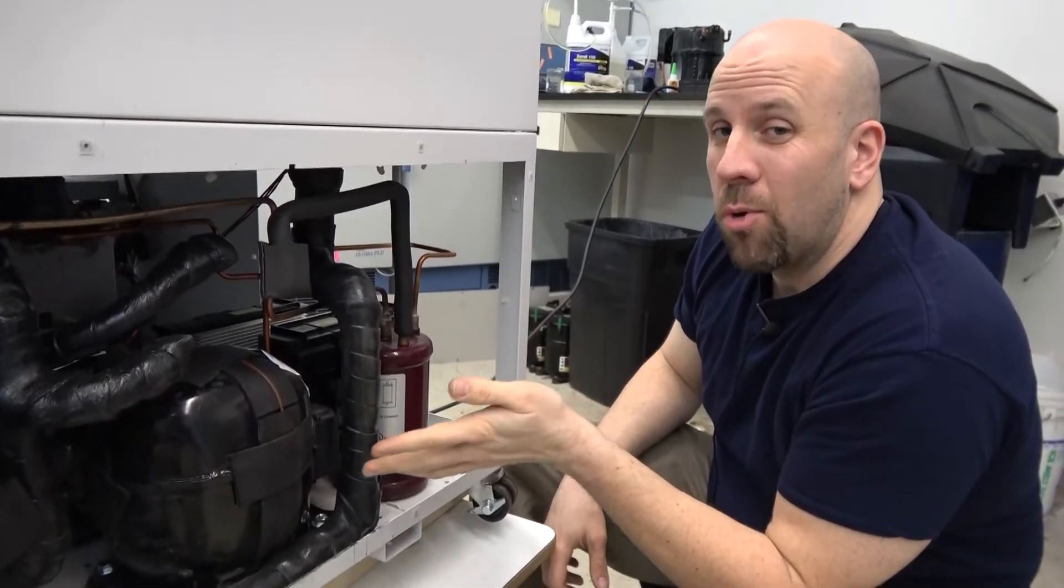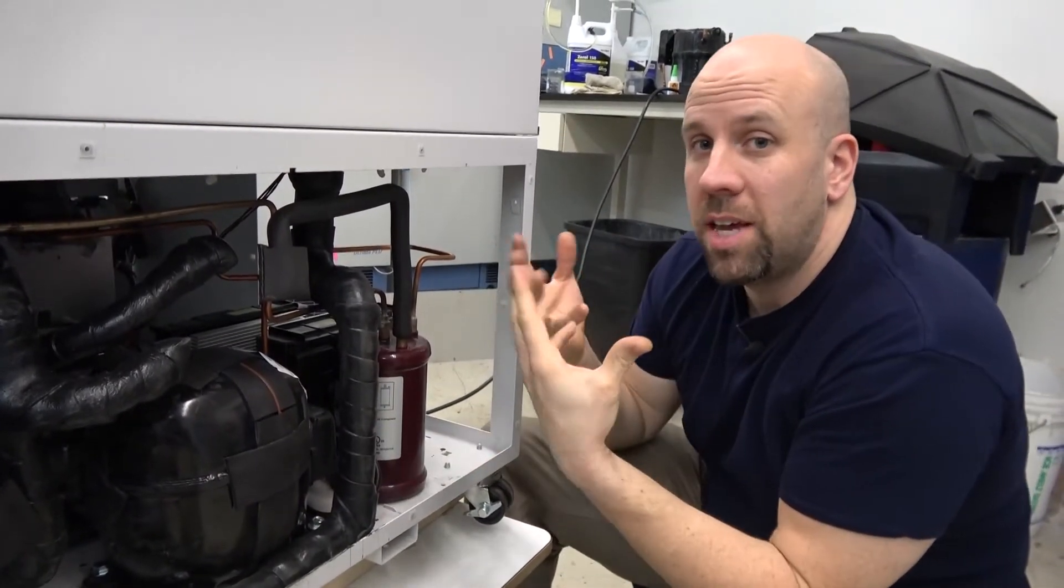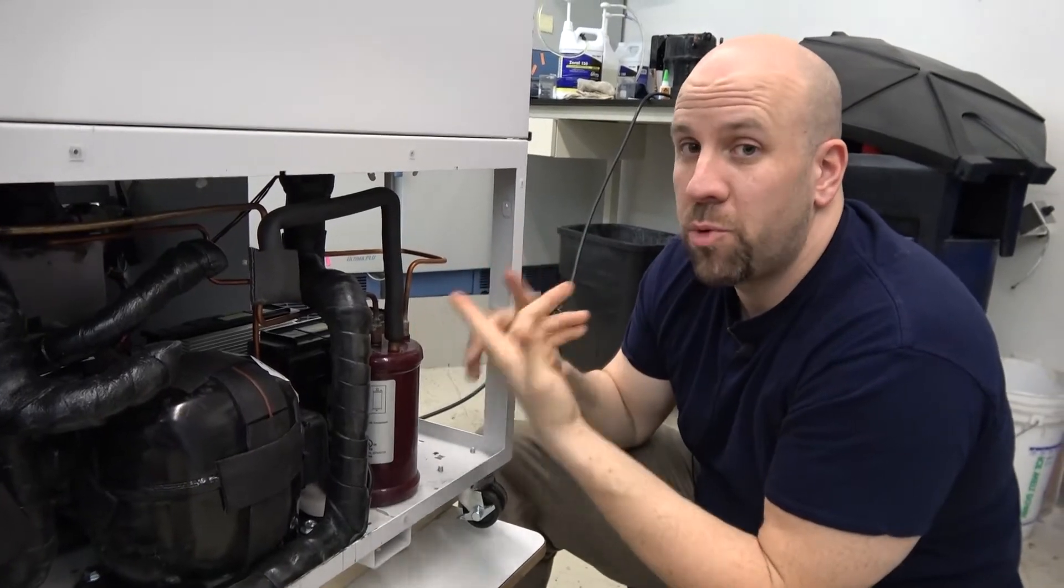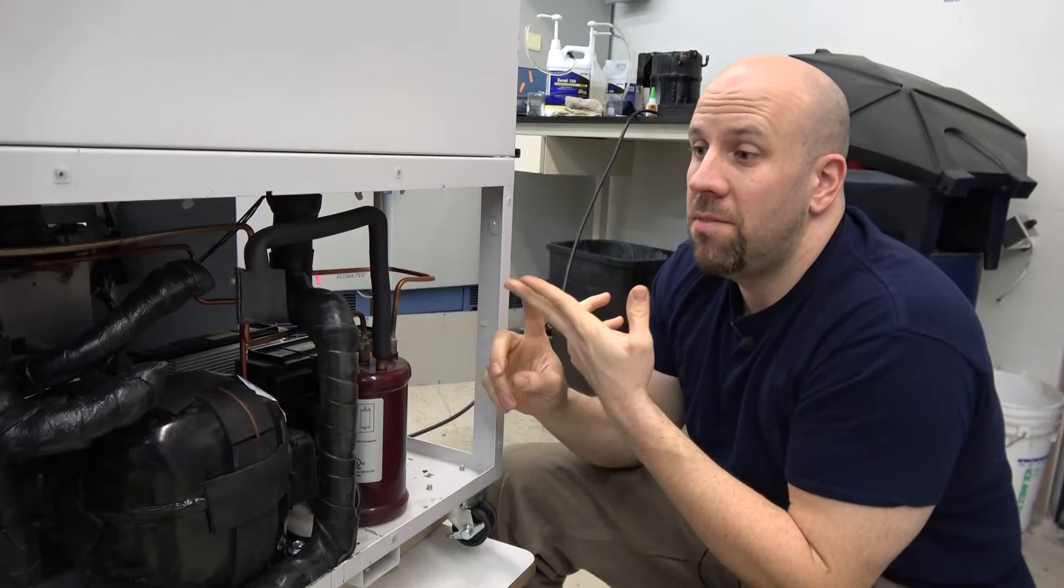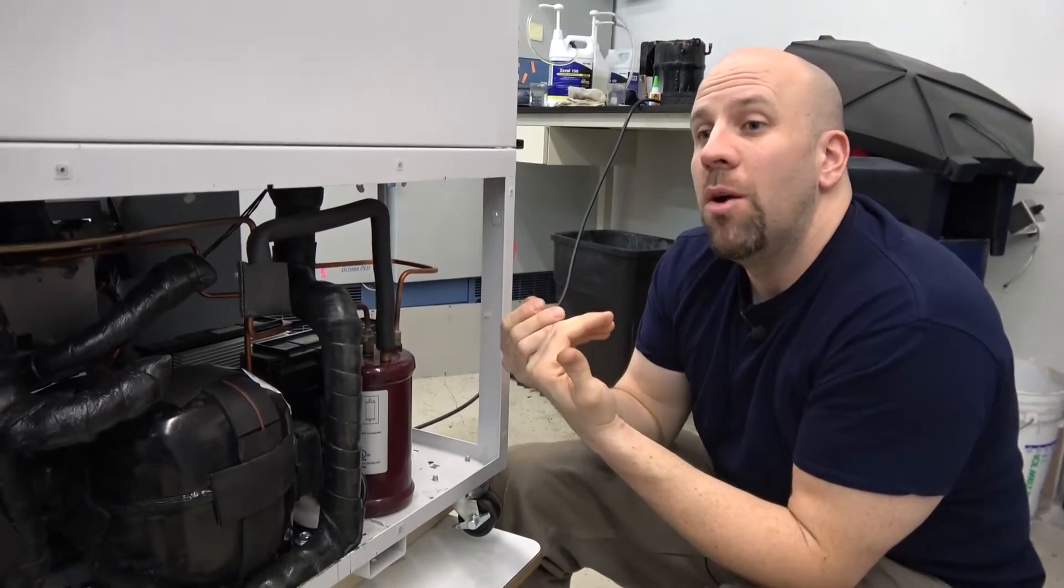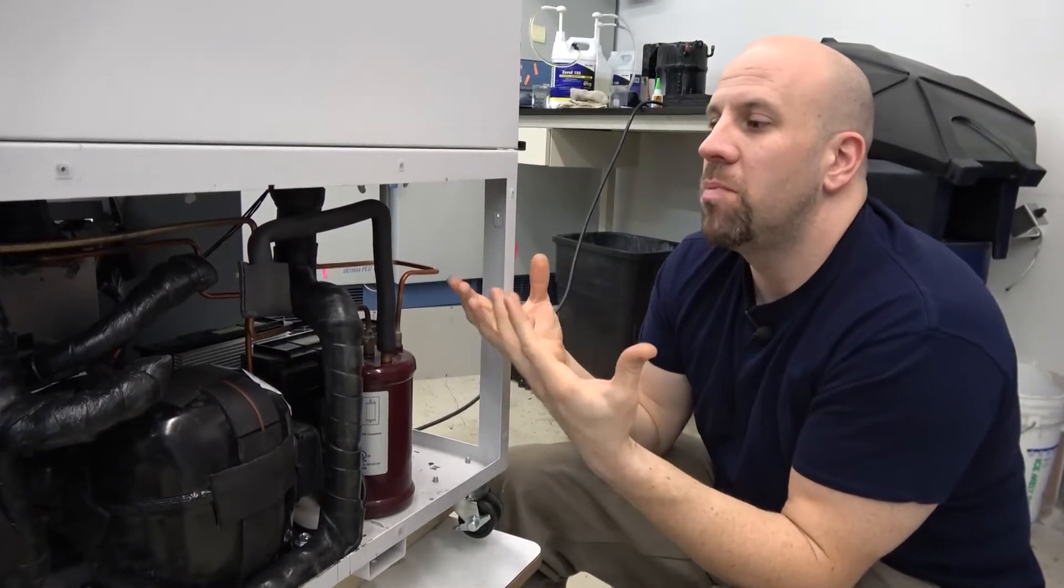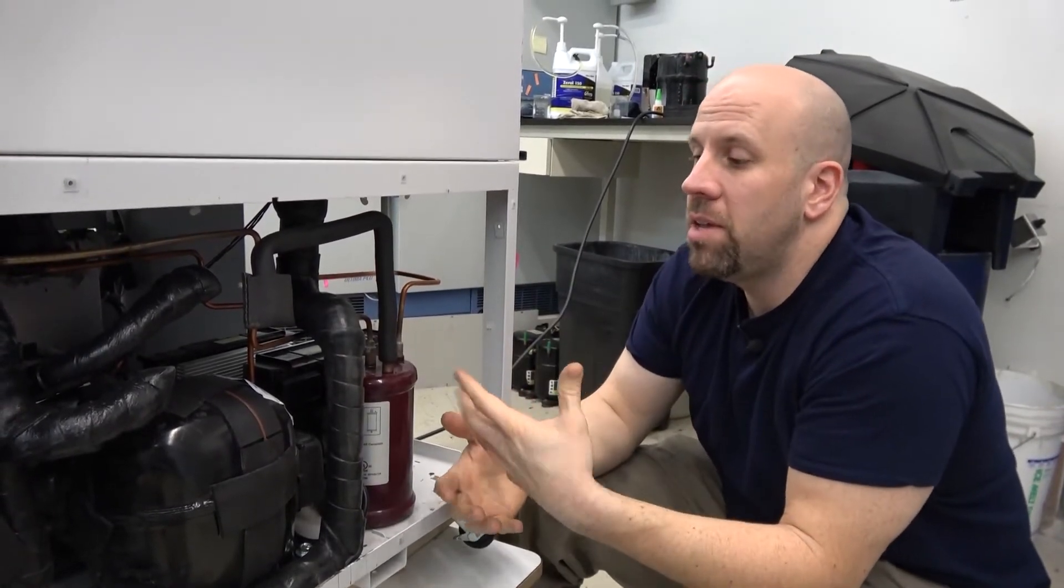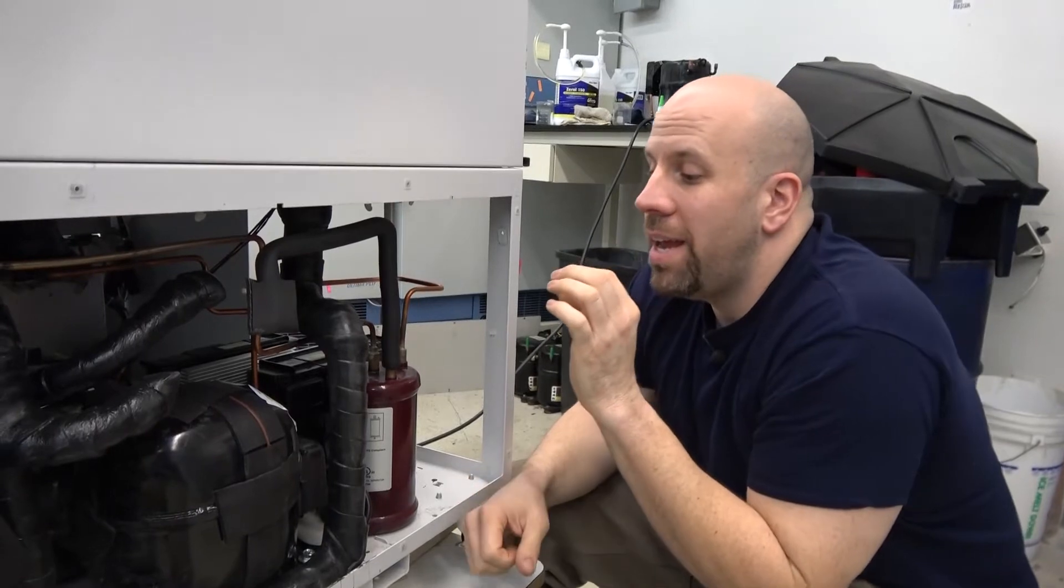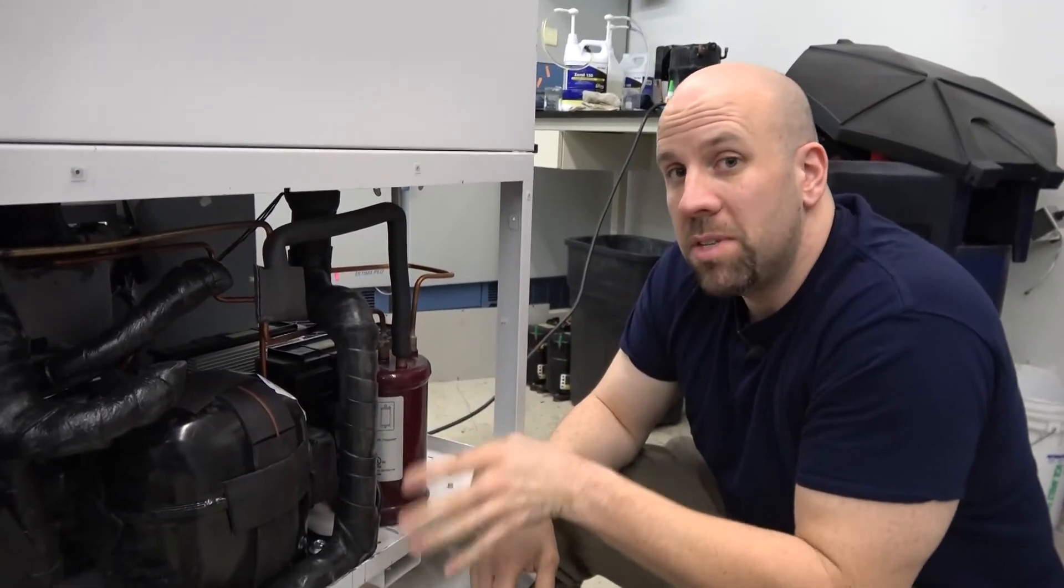We've had some come in that were only like four years old and they already had insulation falling apart and that causes premature failure because of corrosion and because of wasted cooling power essentially. So when the insulation comes off these lines, it absorbs heat from the air around and it makes the compressors work harder to keep the temperatures down.